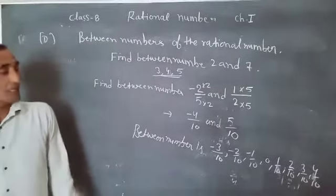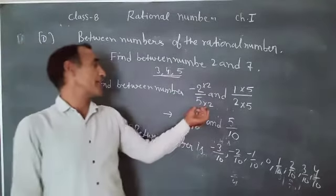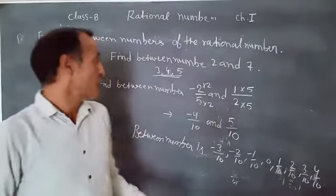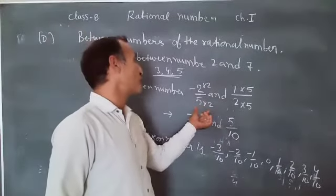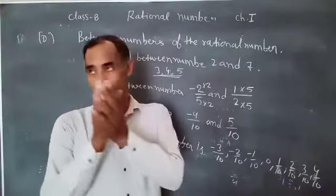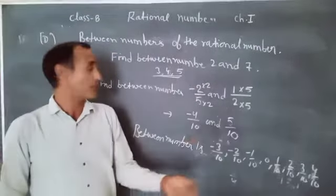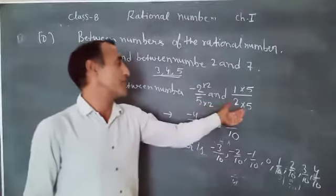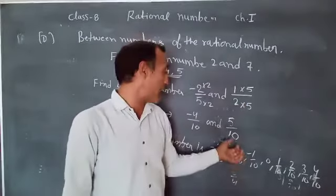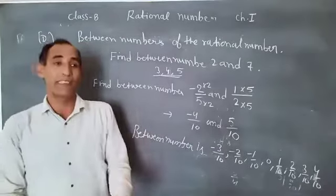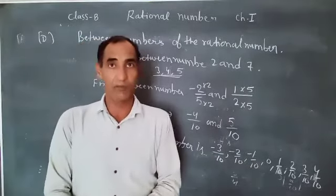No matter that we convert here in the 10, we find the more between numbers. So 5 into 2, LCM is the 10, but more digit is the 20. 5, 10, 20. So we find the denominator of more digit and find the more numbers.